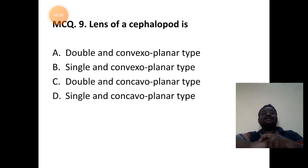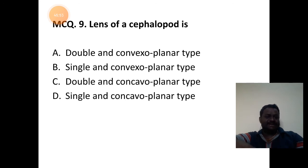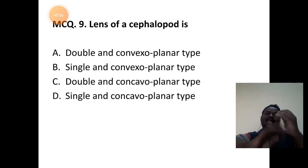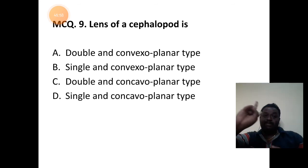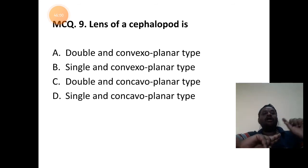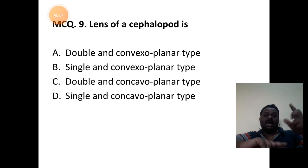The lens of a cephalopod: the eye has a lens. The lens of a cephalopod is double — it is convex plano-planar type. Answer is A.